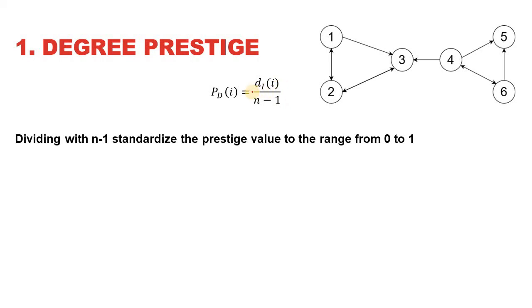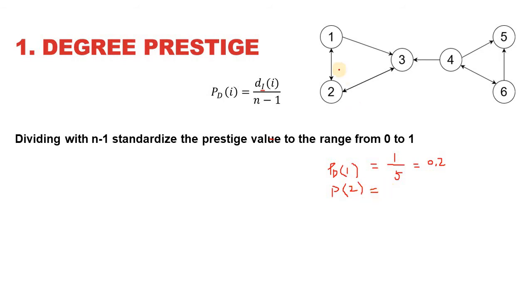According to degree prestige, for any node i, it is calculated as the incident degree of node i divided by the total number of nodes minus one. We must consider a directed graph since it only counts incoming edges. For node 1, there is one edge directed towards it, so that is 1 divided by 5 (six nodes minus one), giving a degree prestige of 0.2. For node 2, there are two incoming edges, so that is 2 divided by 5, giving a value of 0.4.